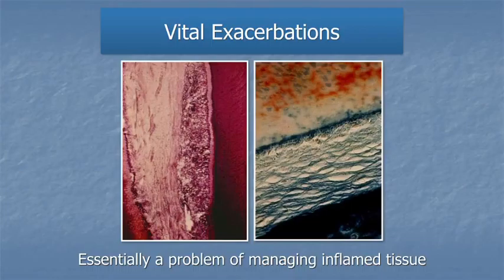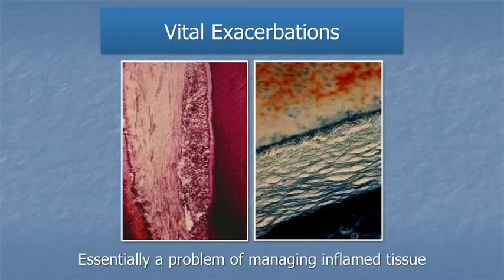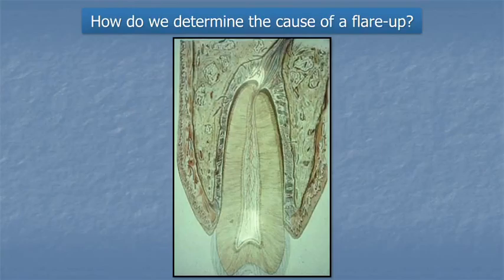We will be focusing on vital exacerbations. Non-vital exacerbations are related but have some degree of difference. The vital exacerbation is a classic problem of managing inflamed tissue, in contrast to the non-vital exacerbation which is focused on the management of infection. The image on the left shows what a pulp looks like with a severe pulpitis. How do we determine the cause of a flare-up?